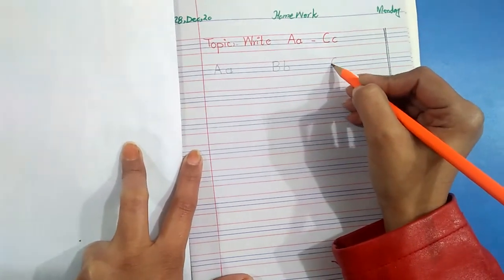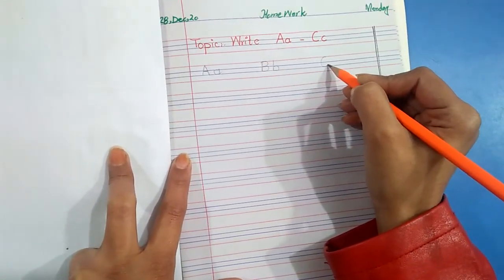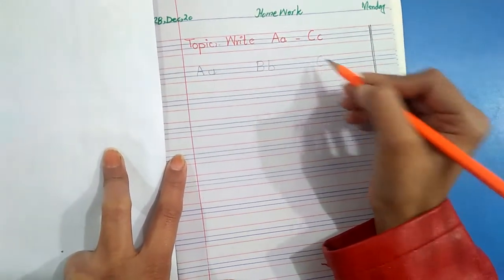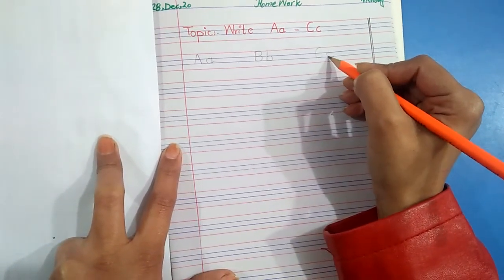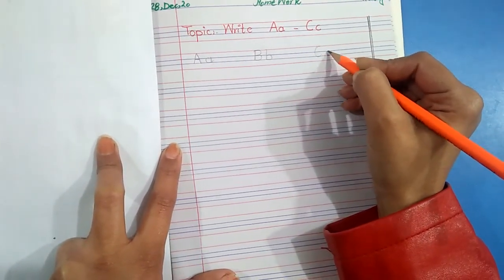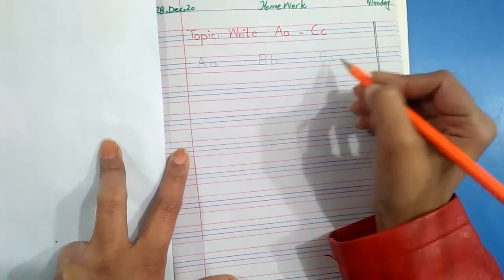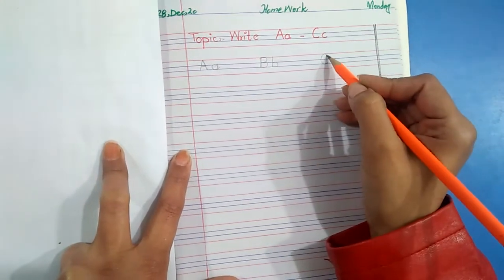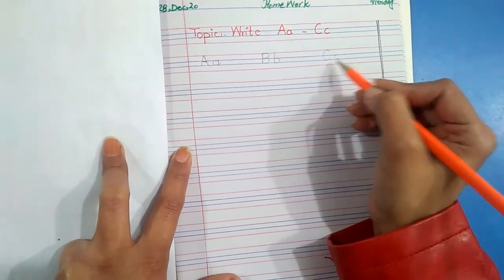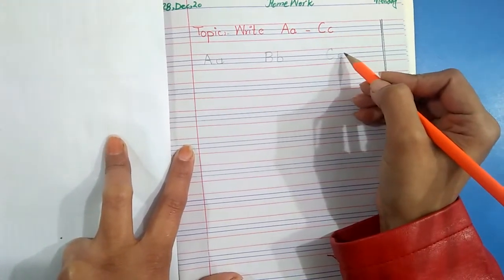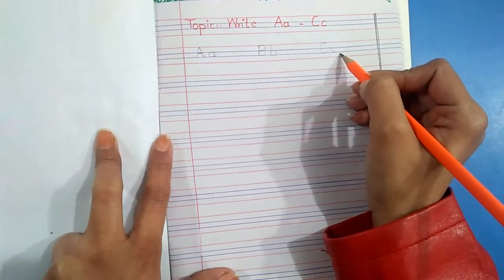Here we write C. A half curve is capital C and a half curve is small c. You can see the capital C in three lines and the small c in two lines.